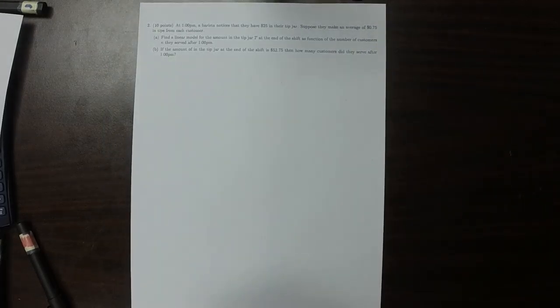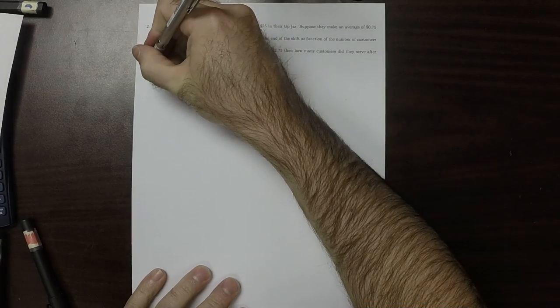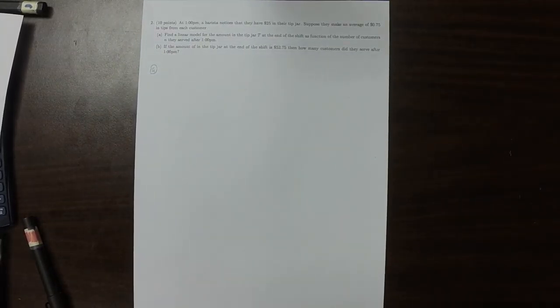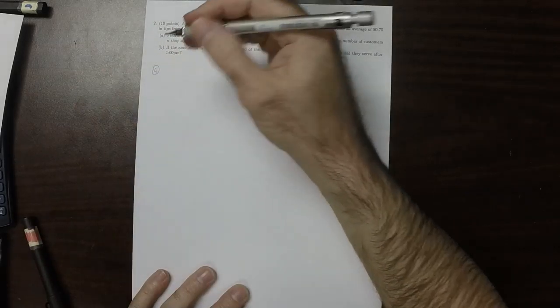So at 1pm, you notice that they have $25 in the jar. Suppose they make an average of 75 cents in tips from each customer. Part A: Find a linear model for the amount of money in the tip jar as a function of the number of customers they served after 1pm.